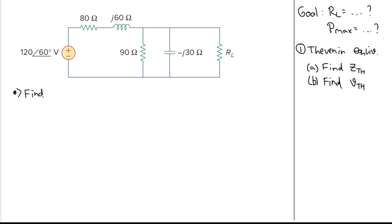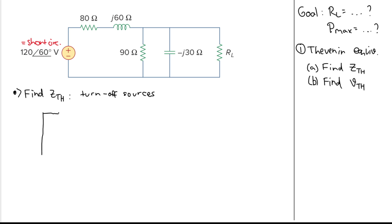Let's find Zth. To find Zth, we turn off all the sources. In this case the voltage source will be replaced by a short circuit. Let's redraw the circuit with that voltage source replaced by a short circuit, and combine this into a single impedance.